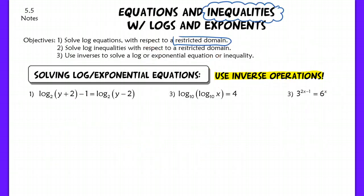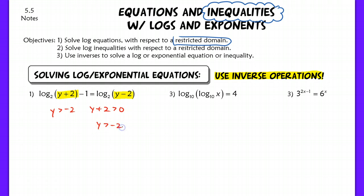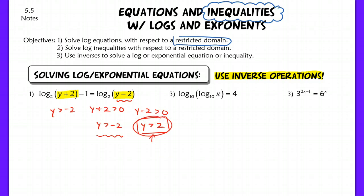You may be asking yourself, why is that important when we're solving equations? When we get our answers, we want to make sure they make sense in the original problem — our inputs have to be positive. For example, we have a domain where y must be greater than negative 2, because we set y plus 2 greater than 0. And from the other term, y minus 2 has to be greater than 0, meaning y has to be greater than 2. This is the more restrictive domain, so our solution should be a value larger than 2.